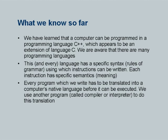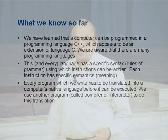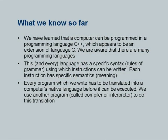Here is a brief summary of what we supposedly know. We have learned that computers can be programmed using high-level languages; we specifically use C++, which appears to be an extension of language C. We are also aware that there are many programming languages, and that every programming language has specific syntax or grammar rules. Instructions can be written to make the computer work provided we follow these grammar rules explicitly. If we make an error, the computer tells us it cannot understand our instructions. Our purpose is to implement some semantics or logic in our algorithms using correctly syntax-based instructions.